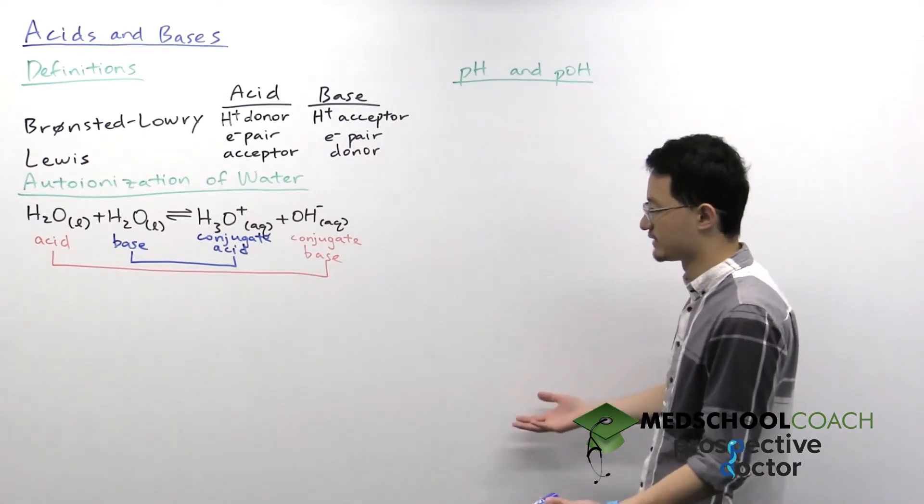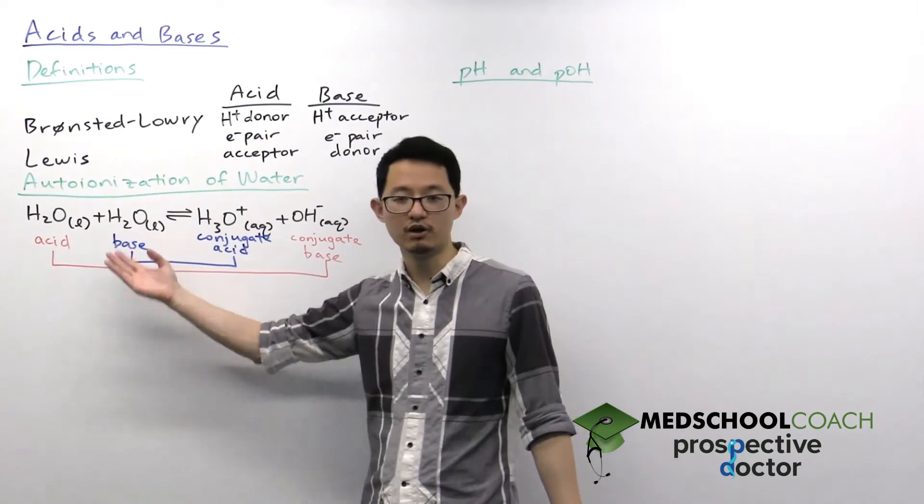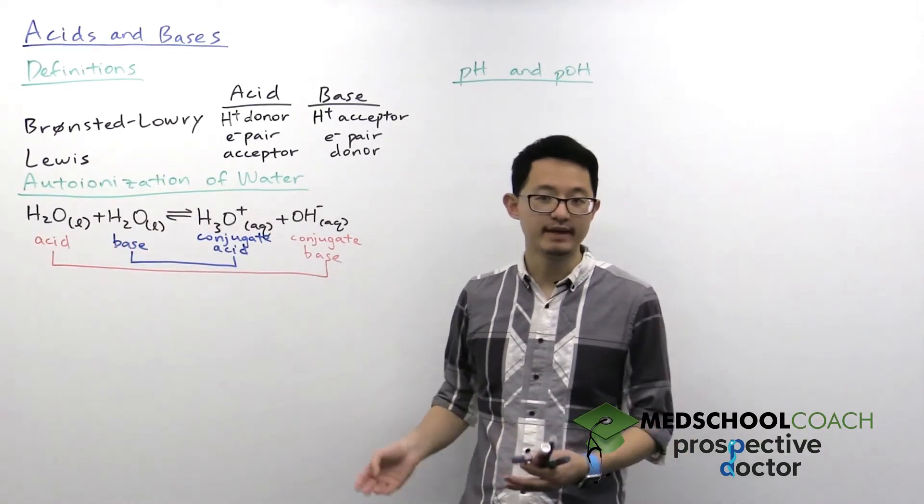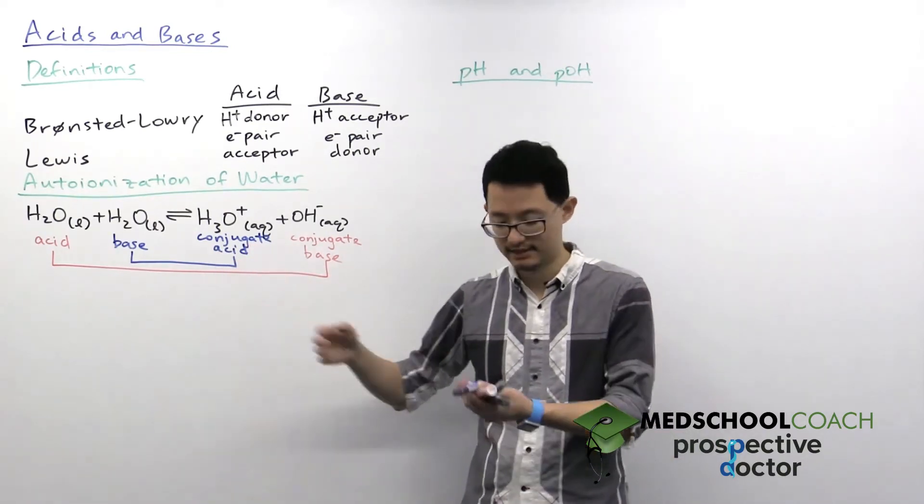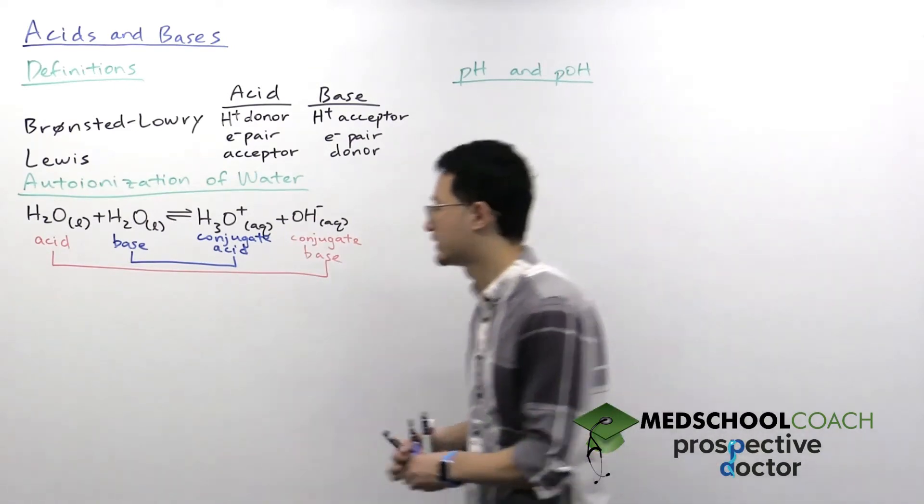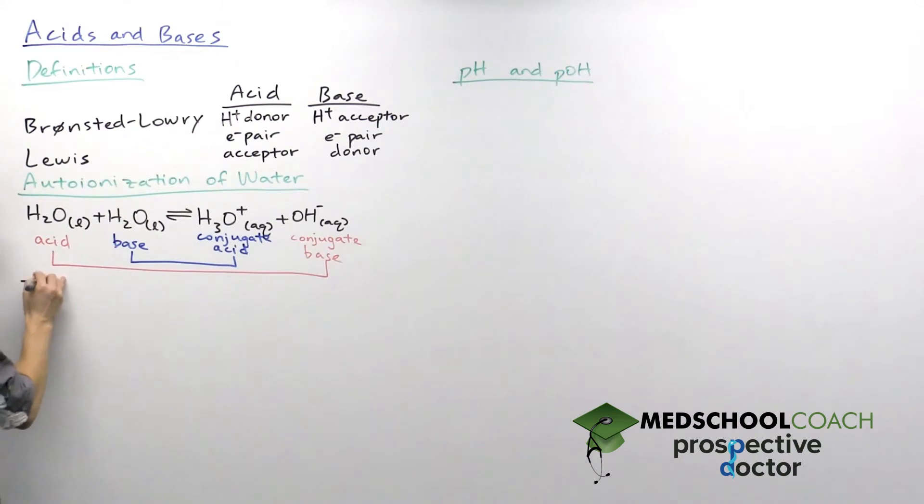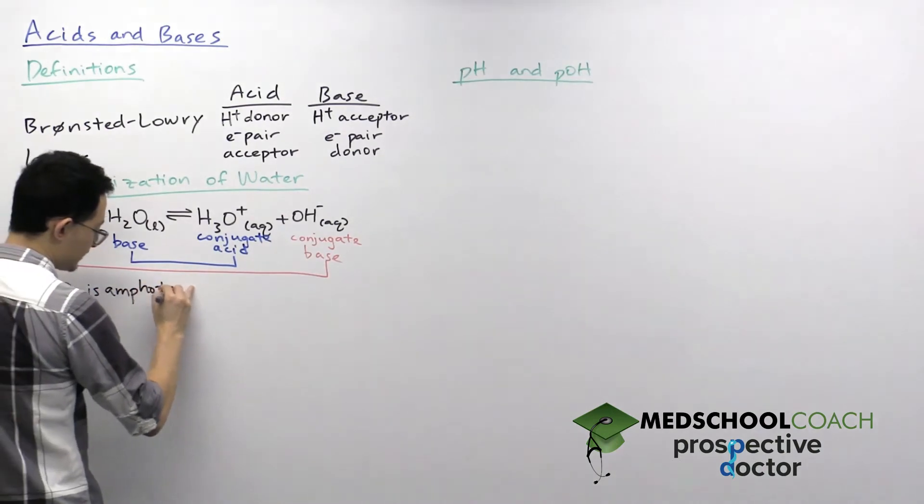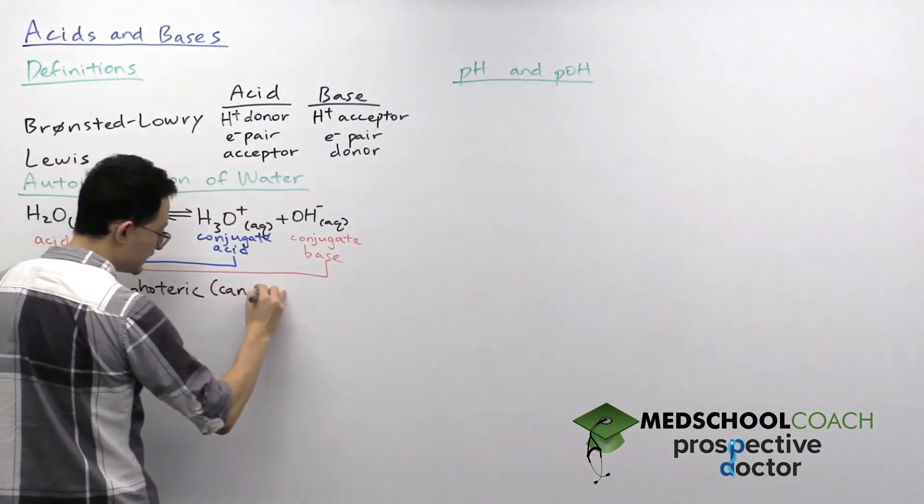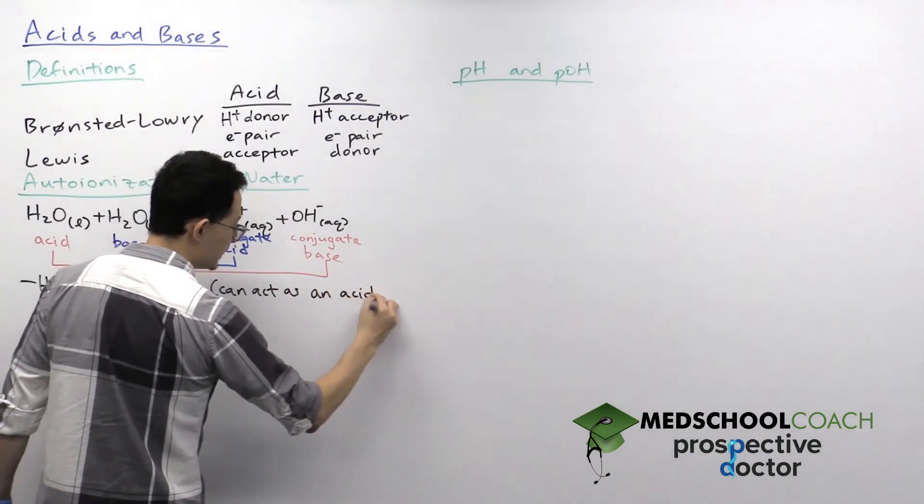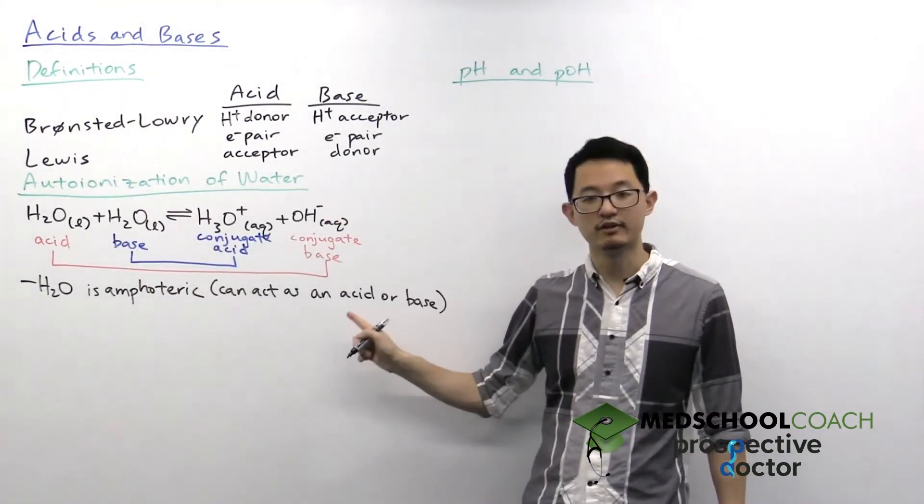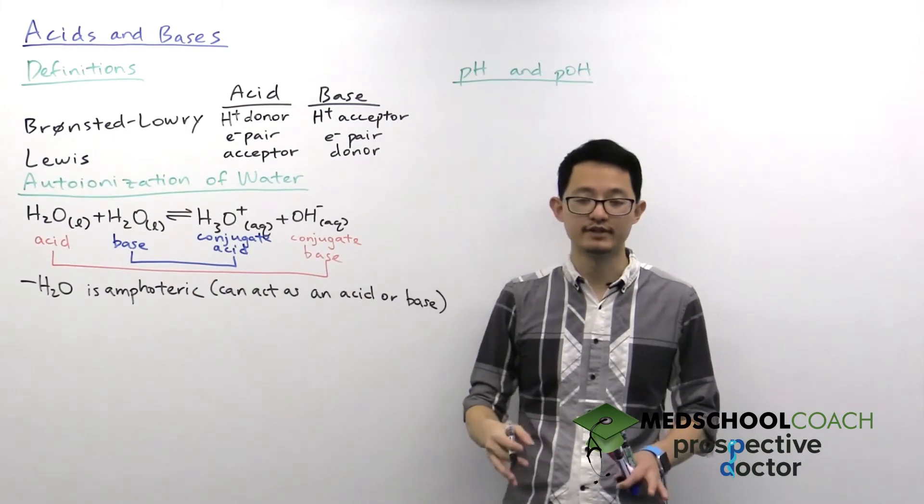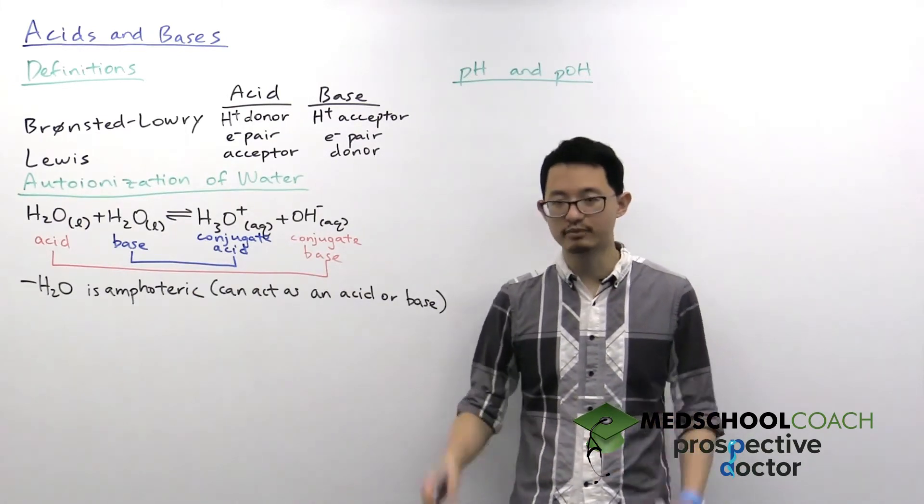Now, what's interesting about this reaction is you have one molecule, water, acting as both an acid and a base. Most molecules don't have this unique ability to act as an acid or a base. And we have a special term that you need to know for MCAT for these types of molecules. That's amphoteric. So we say water is amphoteric. And by amphoteric, we mean that it can act as an acid or it can act as a base. Water is not the only amphoteric molecule. We're going to see additional amphoteric molecules as we go through more videos, and we'll bring them up as we see them.